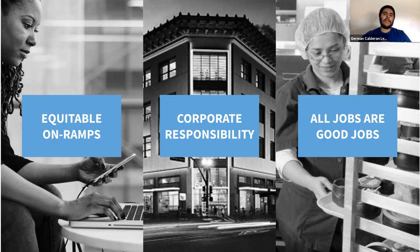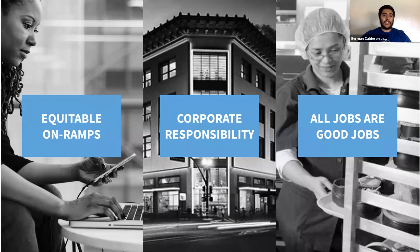We were excited to see that companies were stepping up and committing to continue paying their contingent workers as their offices were closed due to the pandemic. But we want to ensure that same care goes into supporting these workers well beyond the pandemic. We need equitable on-ramps — more access to good-paying, high-opportunity jobs. We need corporate responsibility: companies need to be conscious of their impact in their communities and work with community leaders to ensure their economic success is benefiting their neighbors. And finally, we need to make sure that all jobs are good jobs — that contractors and contingent workers are treated fairly.